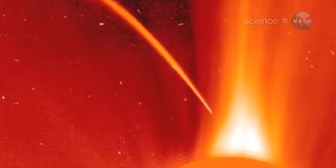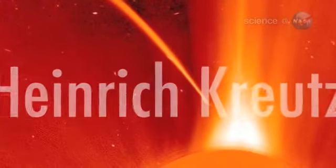Kreutz-sungrazers are fragments from the breakup of a single giant comet many centuries ago. They get their name from 19th-century German astronomer Heinrich Kreutz, who studied them in detail.